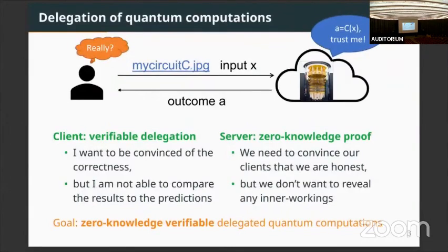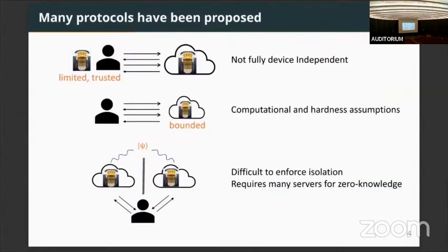Our goal is to have a zero-knowledge verifiable delegation of quantum computations. Several models have been proposed to achieve this goal, each with some advantages and challenges. For example, in some models we do not assume the client is completely classical — we allow some limited but trusted quantum functionality, like quantum measurements or state preparation. However, in this case the client is not fully device-independent. How do you know your quantum device is always trustworthy? Some other protocols assume the server is computationally bounded and use cryptographic techniques to guard against malicious quantum servers or quantum provers.